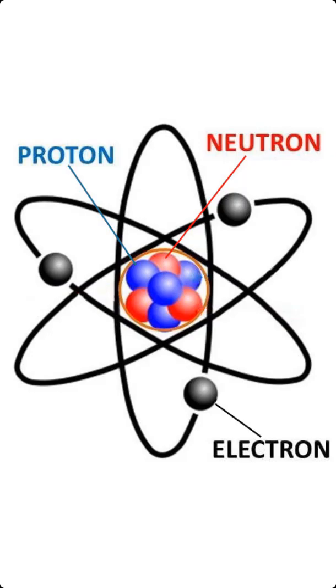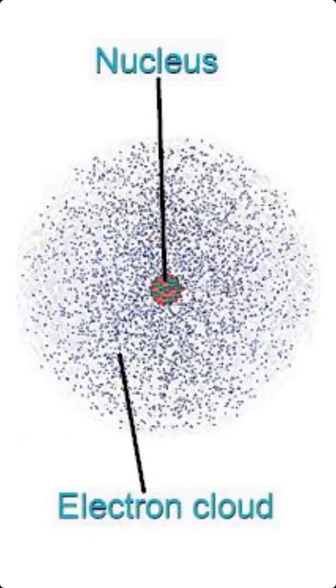We know that protons and neutrons are clustered together in the nucleus. Surrounding the nucleus is the electron cloud. This cloud is very large compared to the size of the nucleus. The atom is mostly empty space.